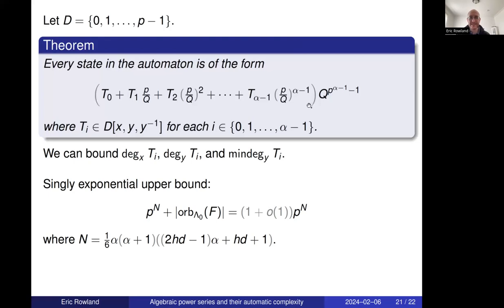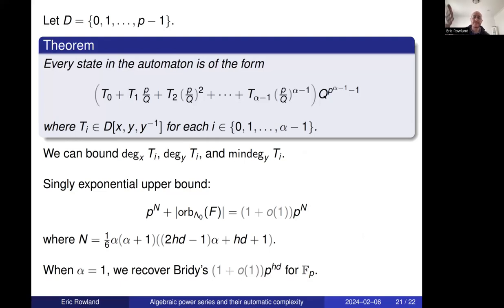Setting α=1 recovers Bryde's bound (the exponent reduces to hd), so our result generalizes Bryde's bound to rings of integers modulo p^α. We have a new proof of Bryde's bound for finite fields and adapted it to Z/p^α Z. Algebraic geometry apparently cannot be extended to the p^α setting, so a method like ours is needed to bound automaton sizes modulo prime powers.